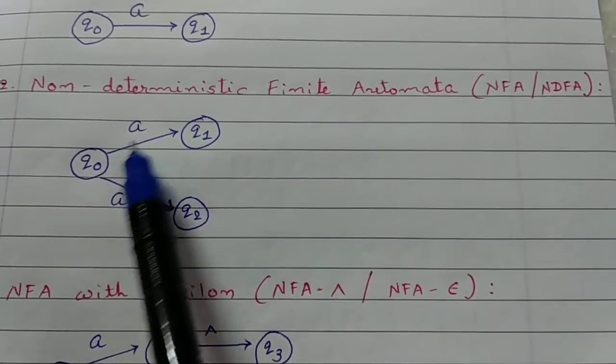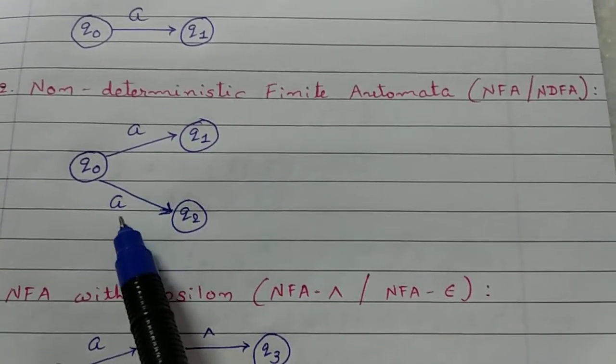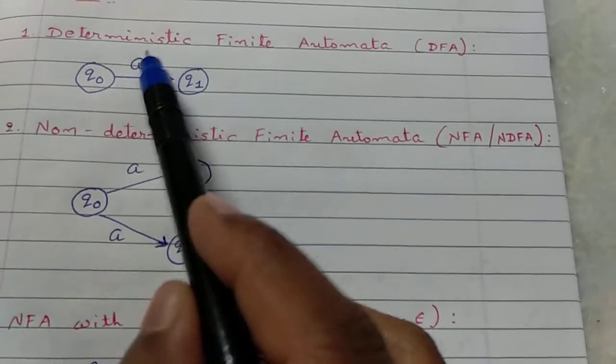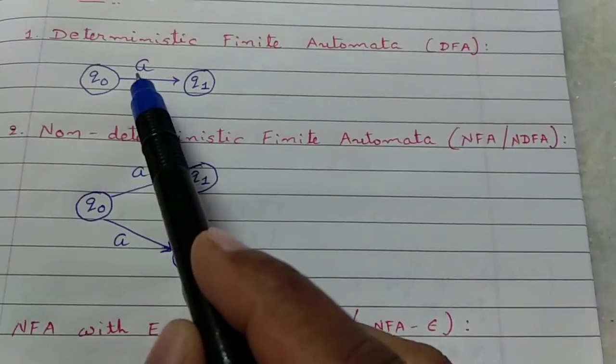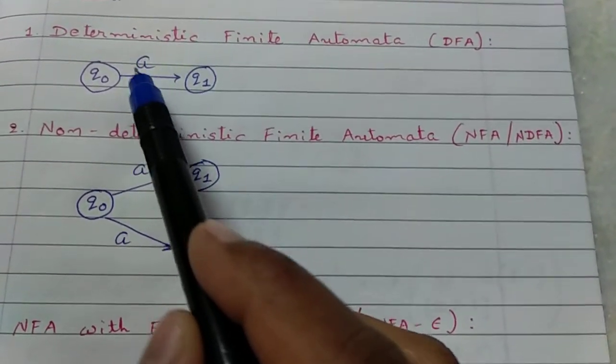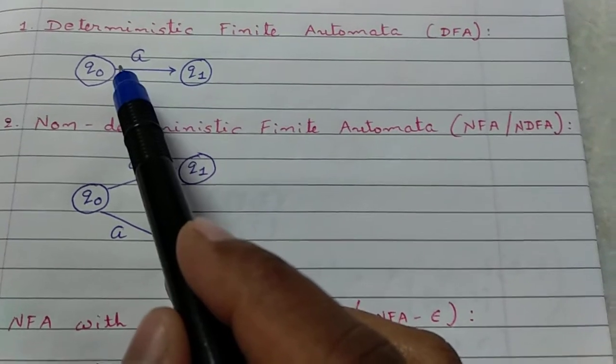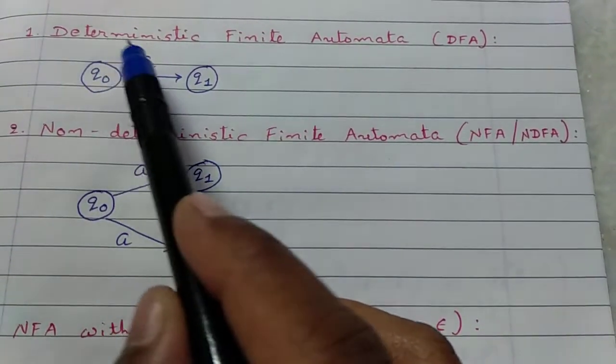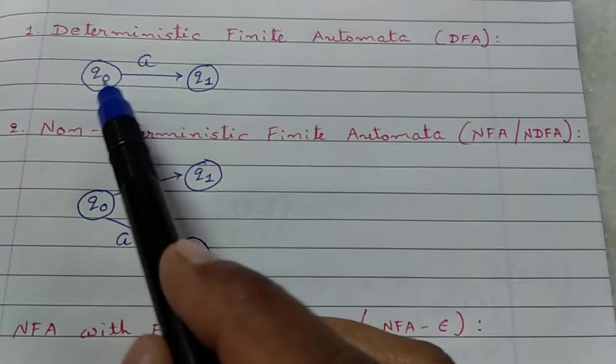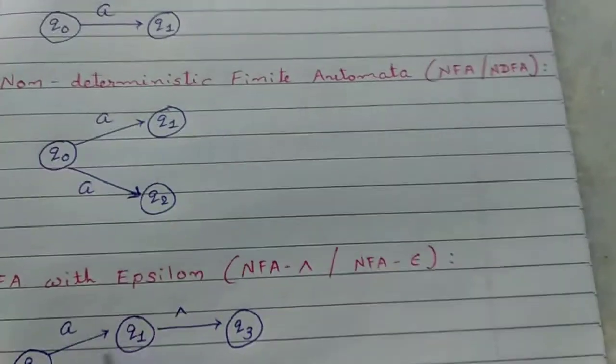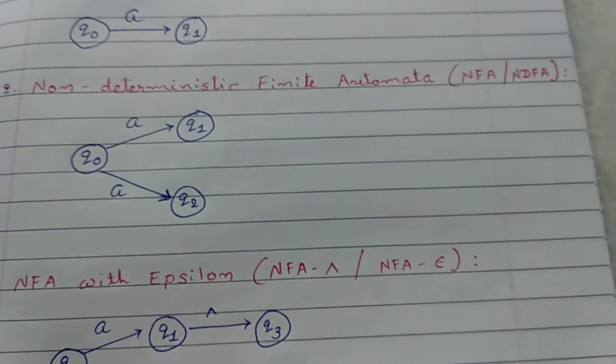There are many options from same input symbol. While in DFA, only one option for same input symbol. In DFA, all input states come for individual state. In NFA, it is not compulsory.